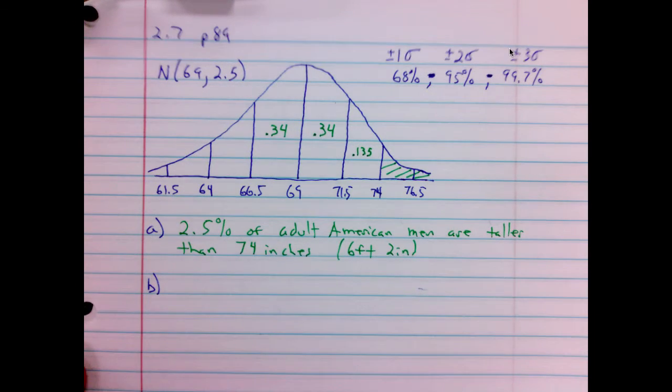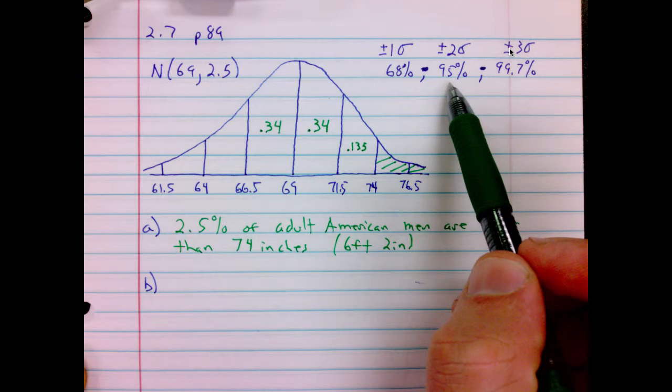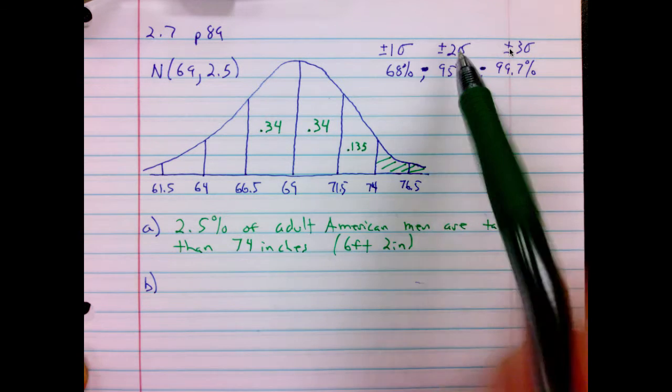Between what heights did the middle 95% fall? Well, we see here the middle 95% is plus and minus two standard deviations.